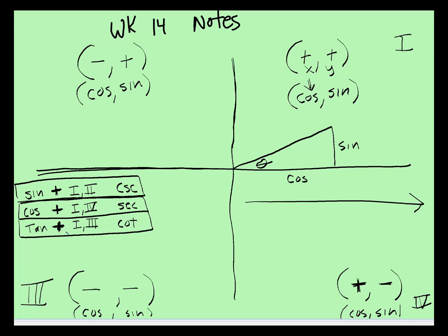And then tangent and cotangent are positive whenever sine and cosine have the same signs, because tangent is sine over cosine, or opposite over adjacent. So in the third quadrant and the first quadrant, when sine and cosine are both positive, or sine and cosine are both negative, that's when tangent and cotangent will both be positive.